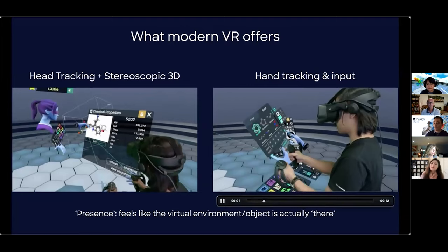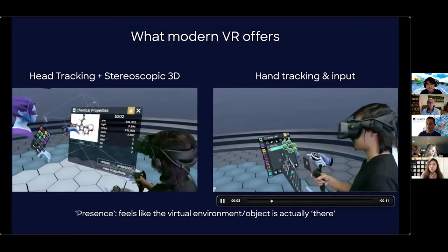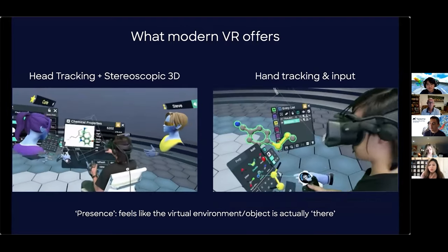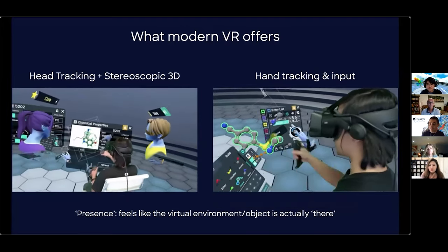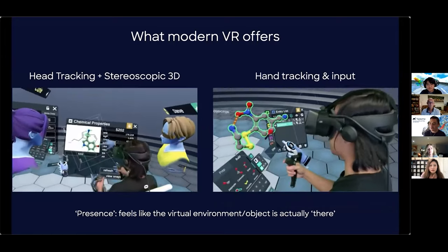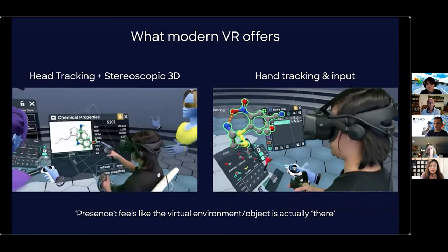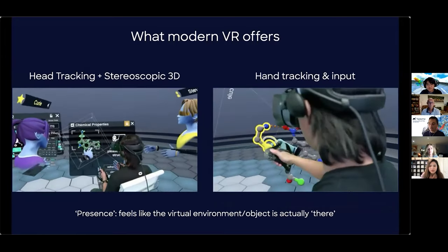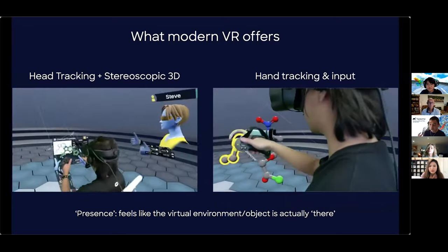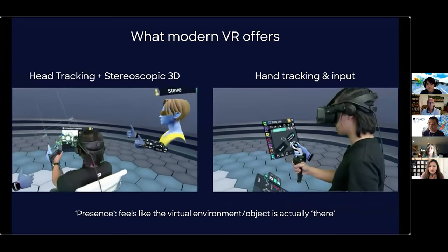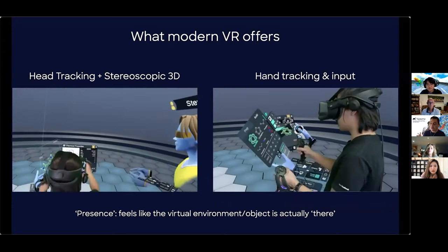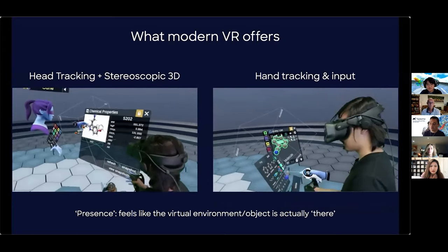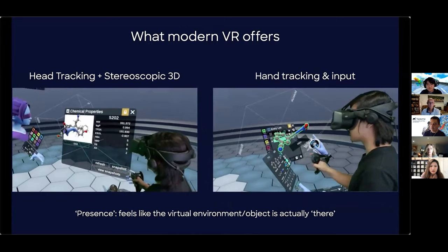So what is modern virtual reality and how is it different from what I just mentioned? Well, first off, it has head tracking and stereoscopic 3D. So it's not just the 3D elements — as you move around the environment, it also tracks your movement.